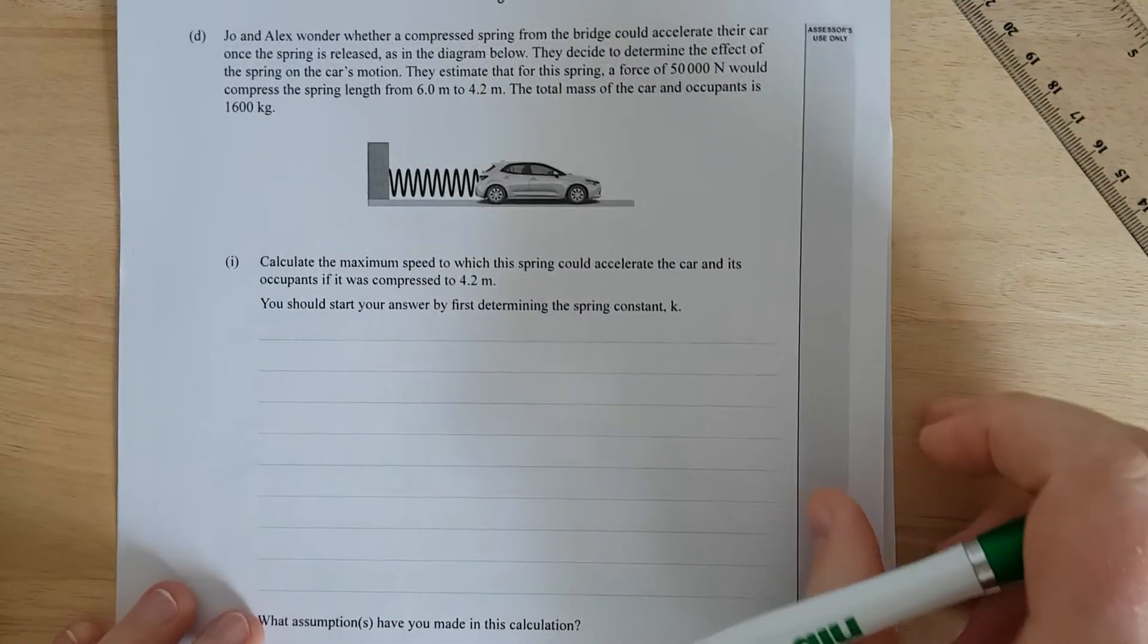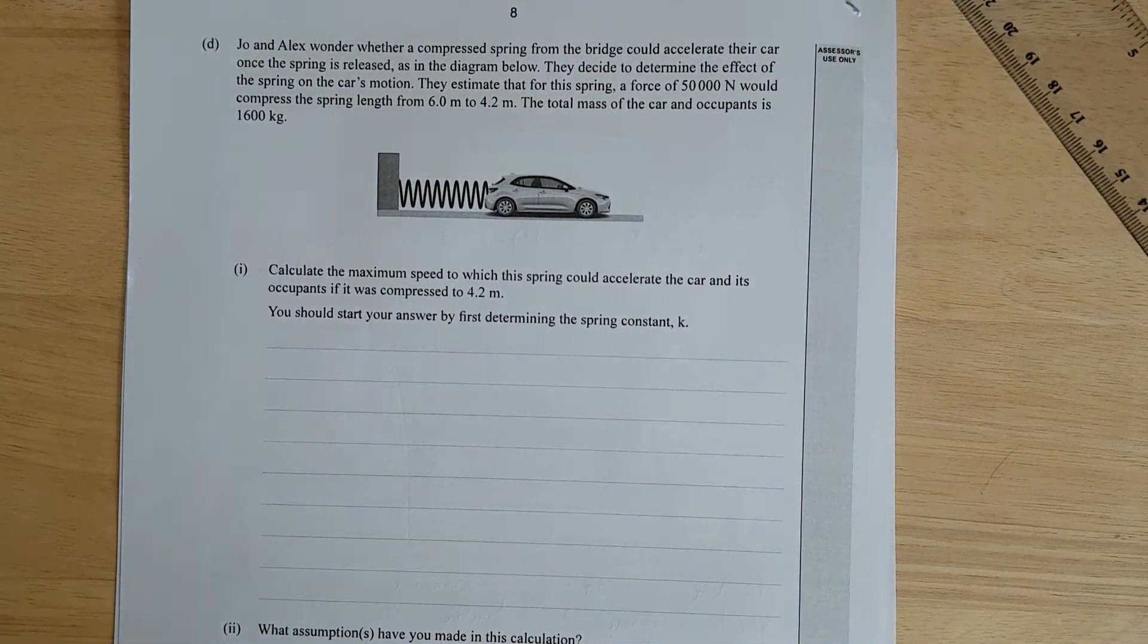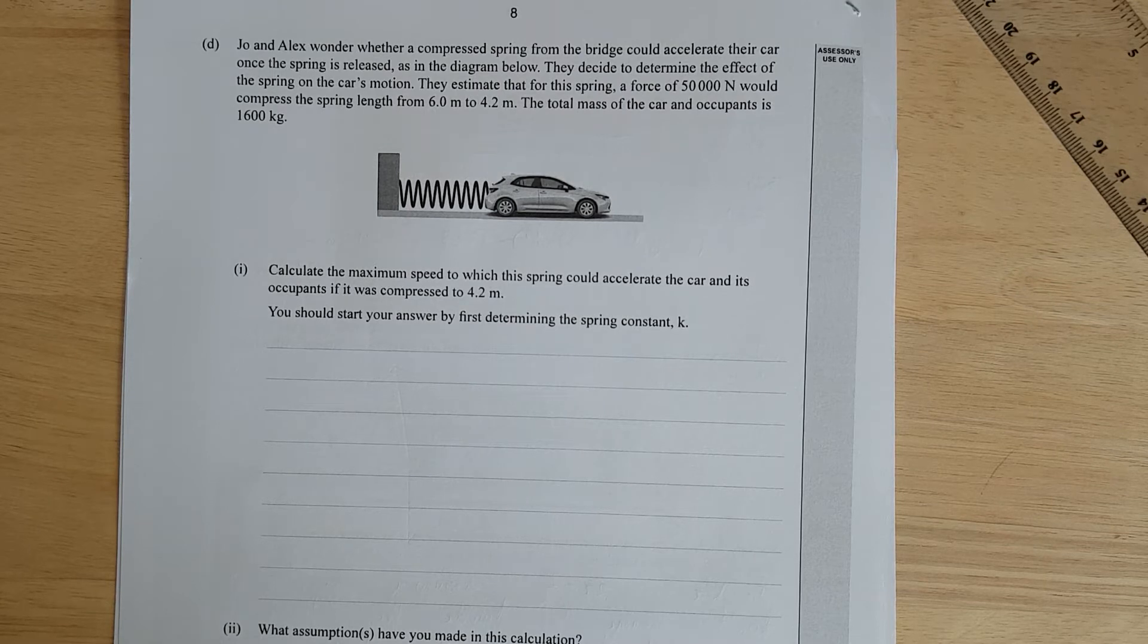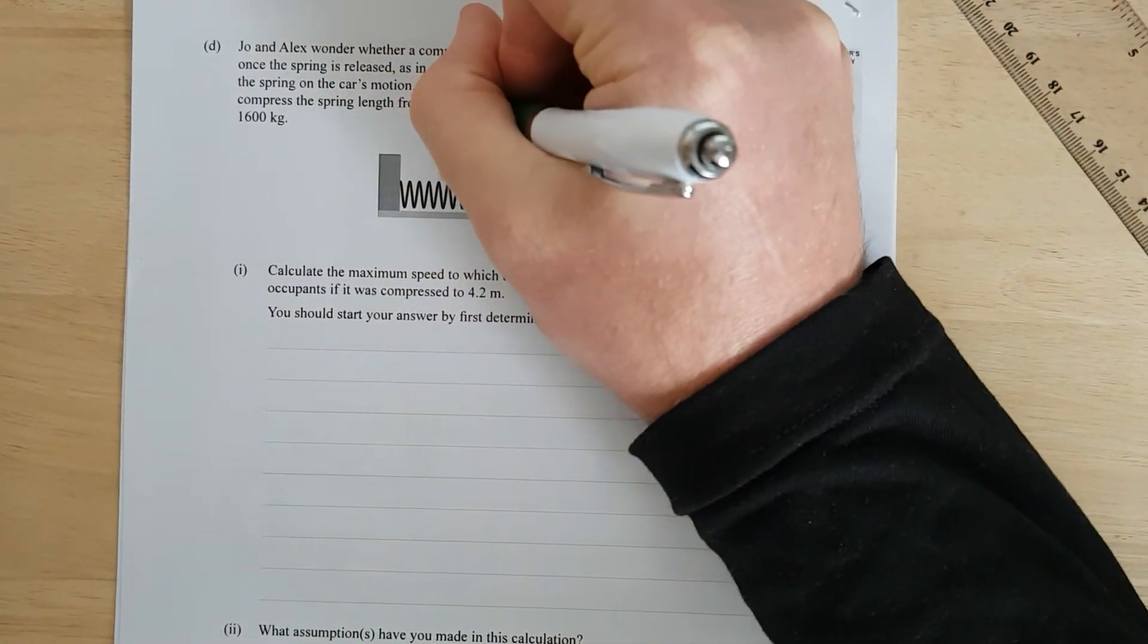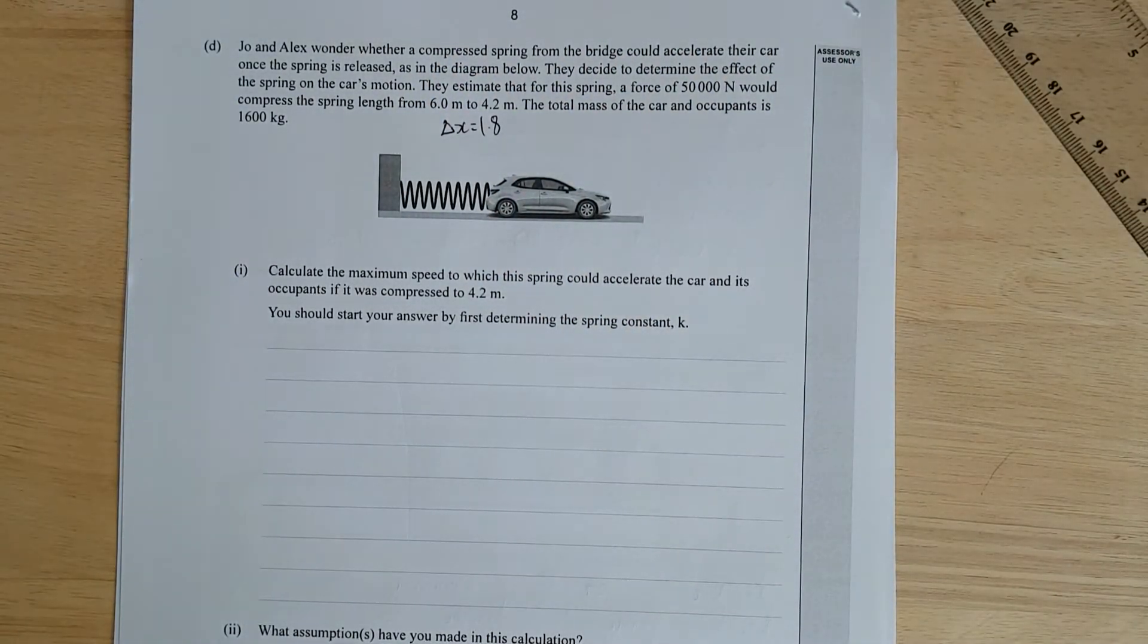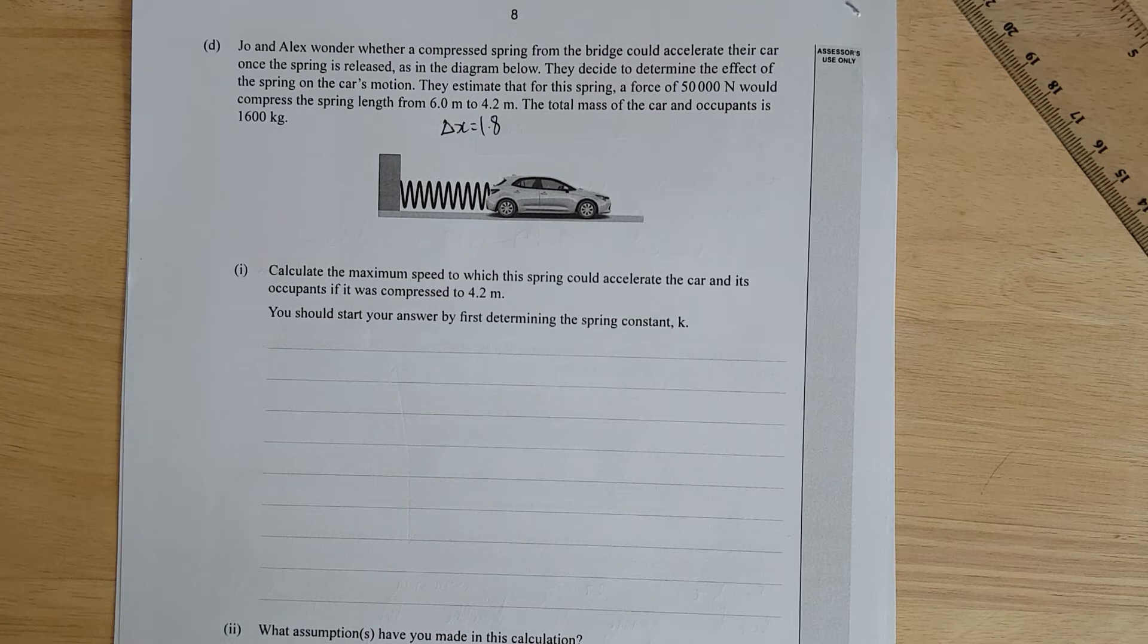Last question. Joe and Alex wonder whether a compressed spring from the bridge could accelerate their car once the spring is released. They decide to determine the effect of the spring on the car's motion. They estimate that for this spring, a force of 50,000 newtons would compress the spring's length from 6 to 4.2. So that's a compression of 1.8.